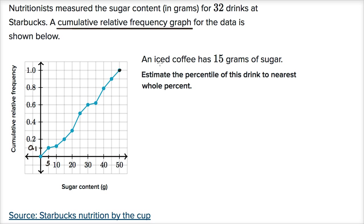An iced coffee has 15 grams of sugar. Estimate the percentile of this drink to the nearest whole percent. So iced coffee has 15 grams of sugar, which would be right over here. We can see they actually have a data point right here, and we can see that 20 percent, or 0.2, — 20 percent of the drinks that Starbucks offers has 15 grams of sugar or less. So the relative frequency is 0.2 for that much sugar or less.